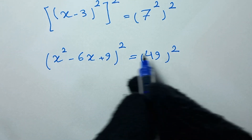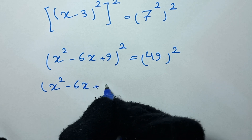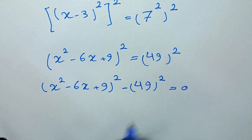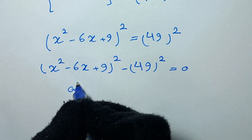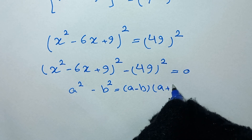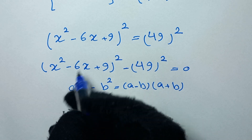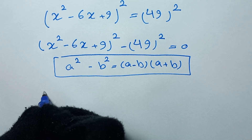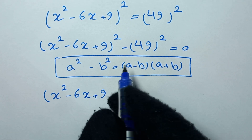In the next step we take everything to one side, giving us (x squared minus 6x plus 9) squared minus 49 squared is equal to zero. Here we have a difference of two squares in the form a squared minus b squared, which we can write as (a minus b)(a plus b), where a is (x squared minus 6x plus 9) and b is 49. So we write: (x squared minus 6x plus 9 minus 49)...